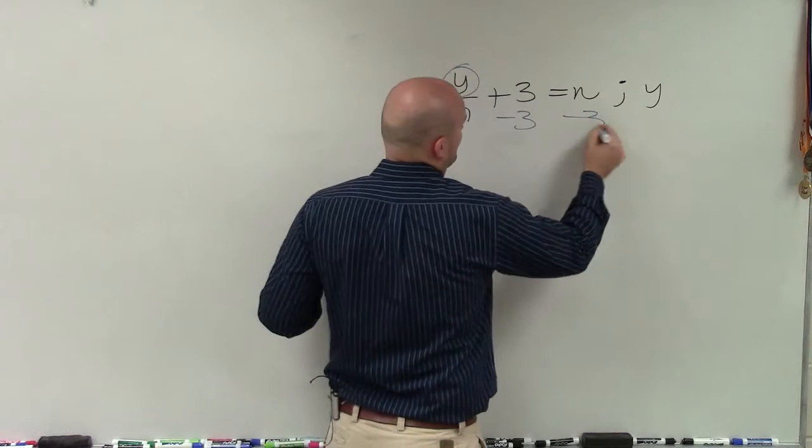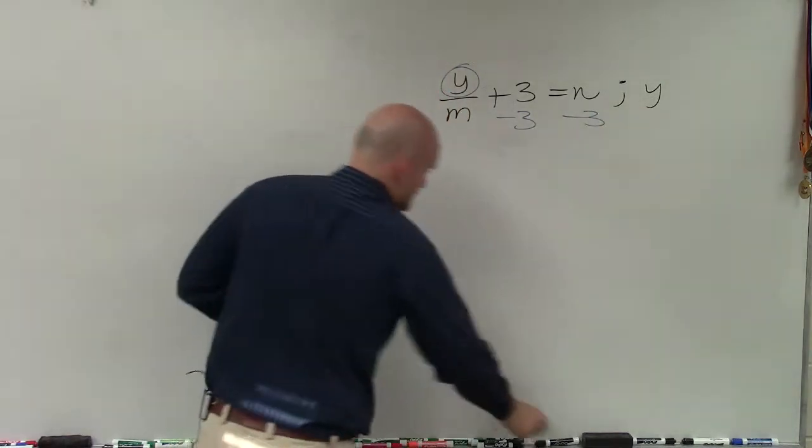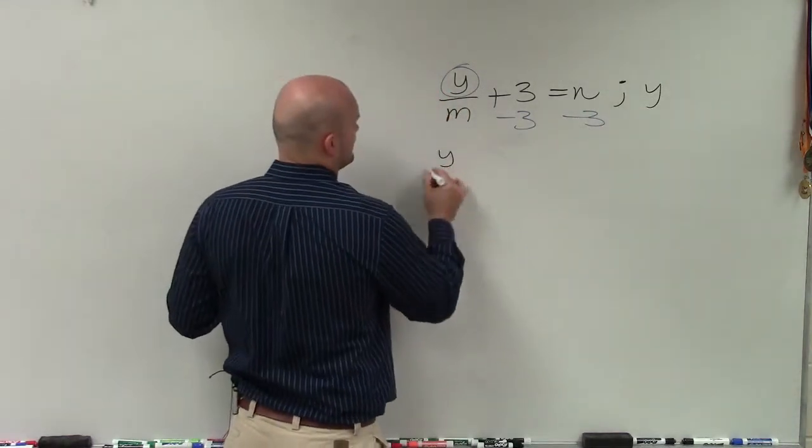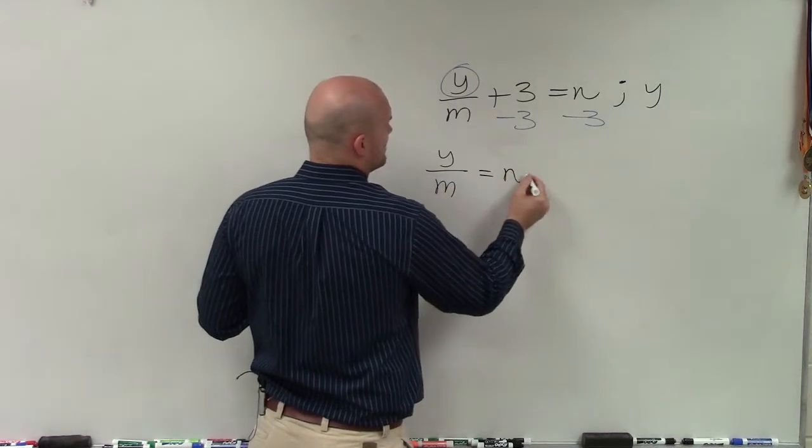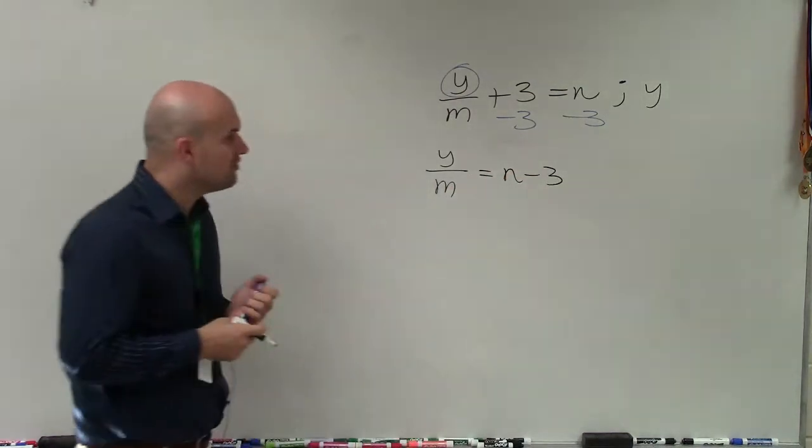So I'll subtract a 3 on both sides. So therefore, I have y divided by m equals n minus 3. I can't solve that anymore.